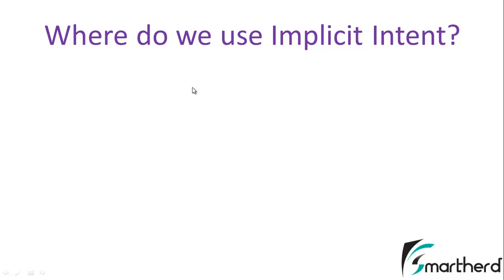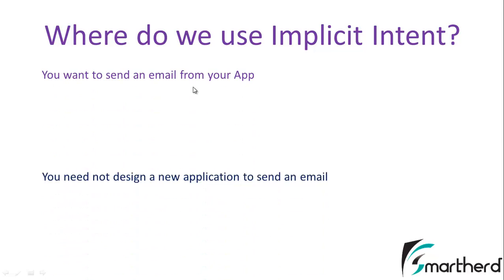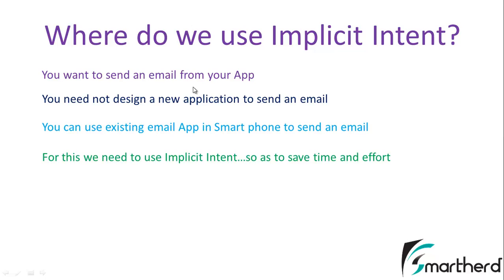The question arises: where do we use implicit intents? Suppose you are making an application and in that application you are having a button. When the user presses that button, the user wants to send an email through your application. In such a situation, it is quite hectic for the developer to design a separate application to send an email.